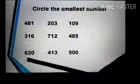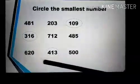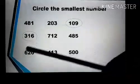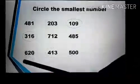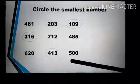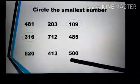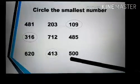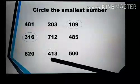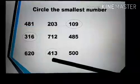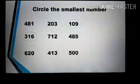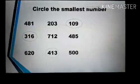Next we have 620, 413, and 500. Compare the first digit of each number: 6, 4, and 5. 4 is smaller than 5 and 6, so the number 413 is the smallest number. I hope you will understand this concept.